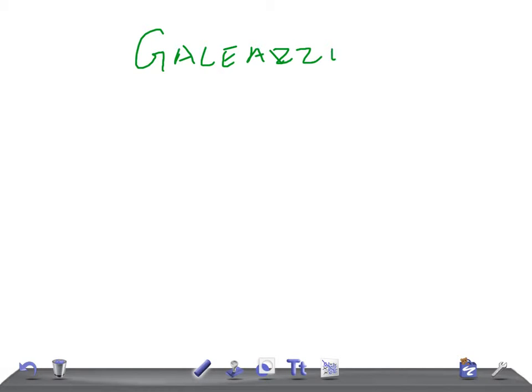Galeazzi fracture or dislocation. In a previous video we discussed the Monteggia fracture and dislocation — the types, diagnosis, treatment, and complications. The Galeazzi fracture is the counterpart of the Monteggia fracture. In Monteggia fracture, we know it involves a fracture of the upper third of the ulna with dislocation of the head of the radius.